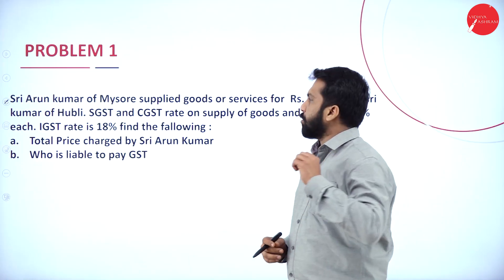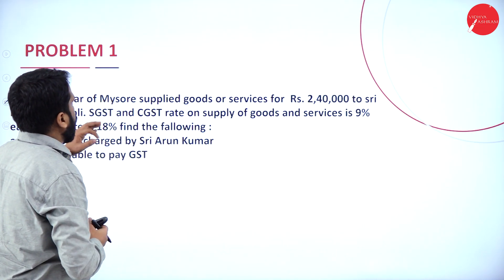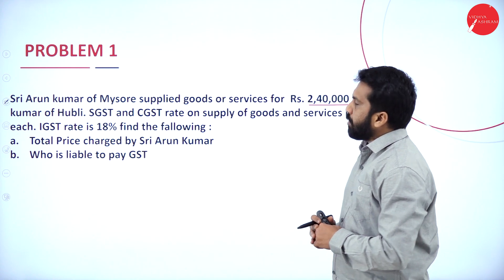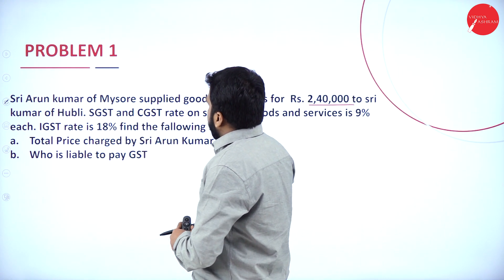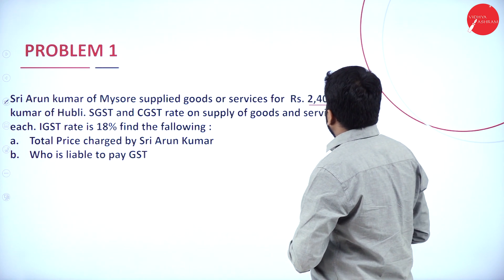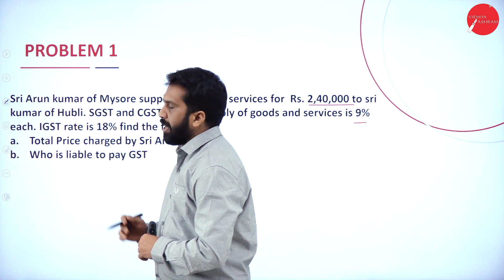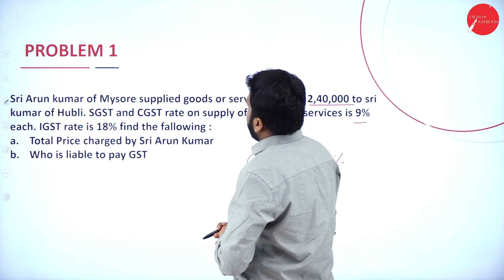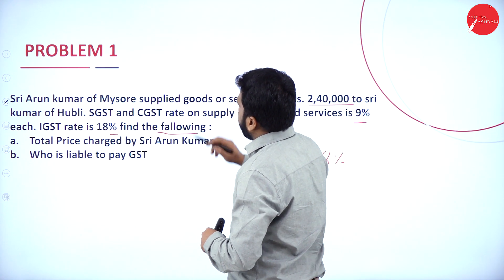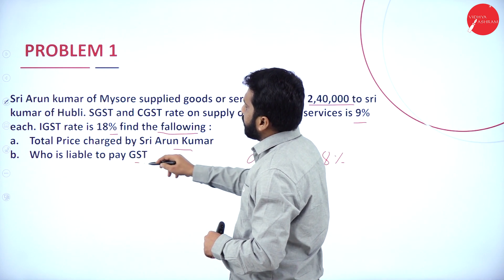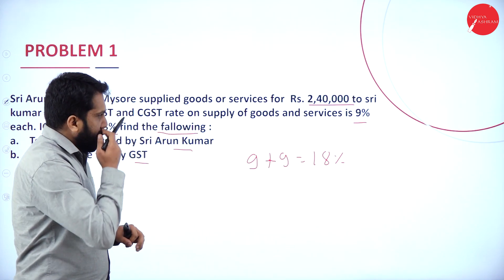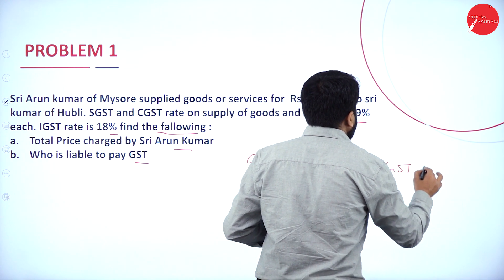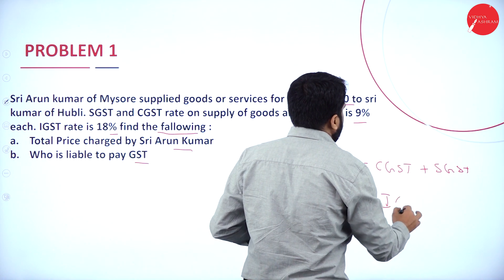Now we'll go for Problem Number 1, the easiest one. CGST and SGST rate on supply of goods and services is 9% each. Nine plus nine equals 18%, and IGST rate is also 18%. We need to find the total price charged by Shri Arun Kumar and who is liable to pay GST. Now, CGST and SGST applies for intra-state transactions. IGST applies for inter-state transactions.